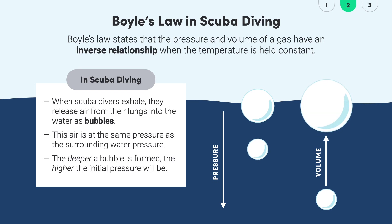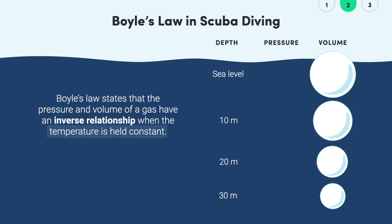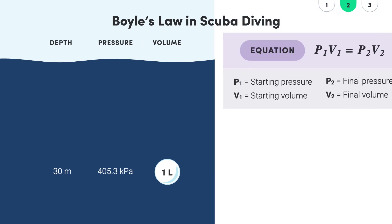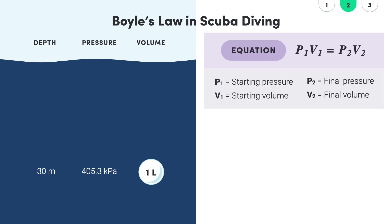Now we've got the basics, let's have a go at graphing this relationship. For Boyle's Law to work, we'll assume that the temperature remains constant throughout the dive. Let's say our bubble starts at a depth of 30 meters, which equates to approximately 405.3 kilopascals of pressure with a volume of 1 liter. Our numbers here refer to the starting pressure and volume represented by P1 and V1, and the final pressure and volume represented by P2 and V2.